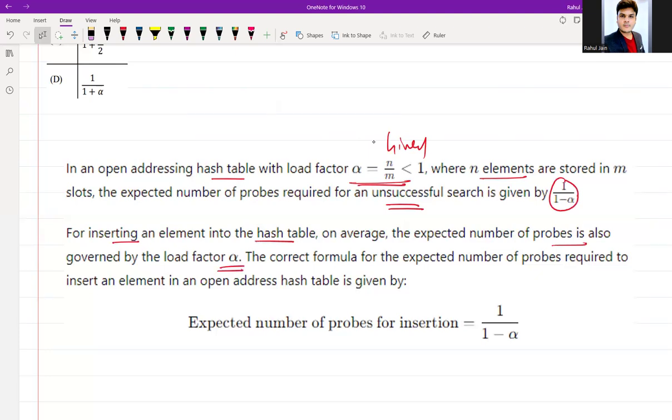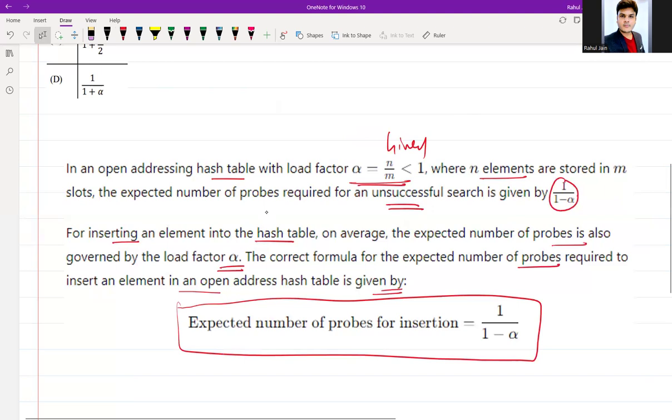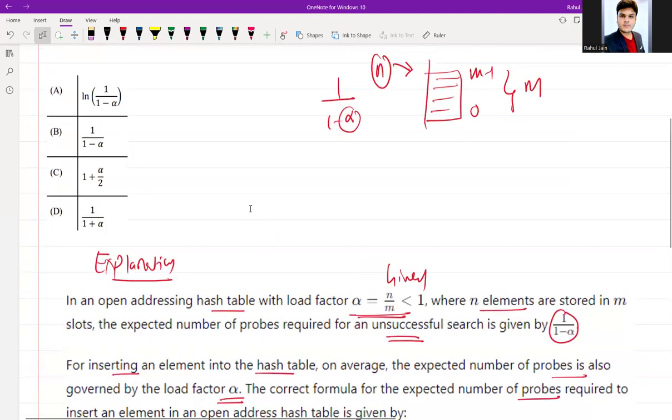The correct formula for the expected number of probes required to insert an element in an open address hash table is given by 1/(1-α). By this explanation we can choose the correct answer, which is option B.